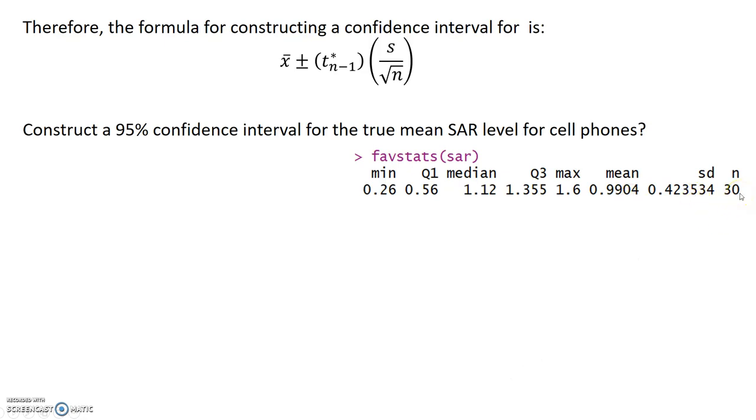Now, the other thing that I need to construct a confidence interval is a critical value. So, using the commands given to you in the notes, I can use the QT function to find my critical value. The first piece of information I have to give this function is the percentile. So, if we desire 95% confidence, the percentile corresponding to that would be 0.975. The other thing I need to give this function is the degrees of freedom. For this, it would be 29. Our critical value for the problem is 2.045.